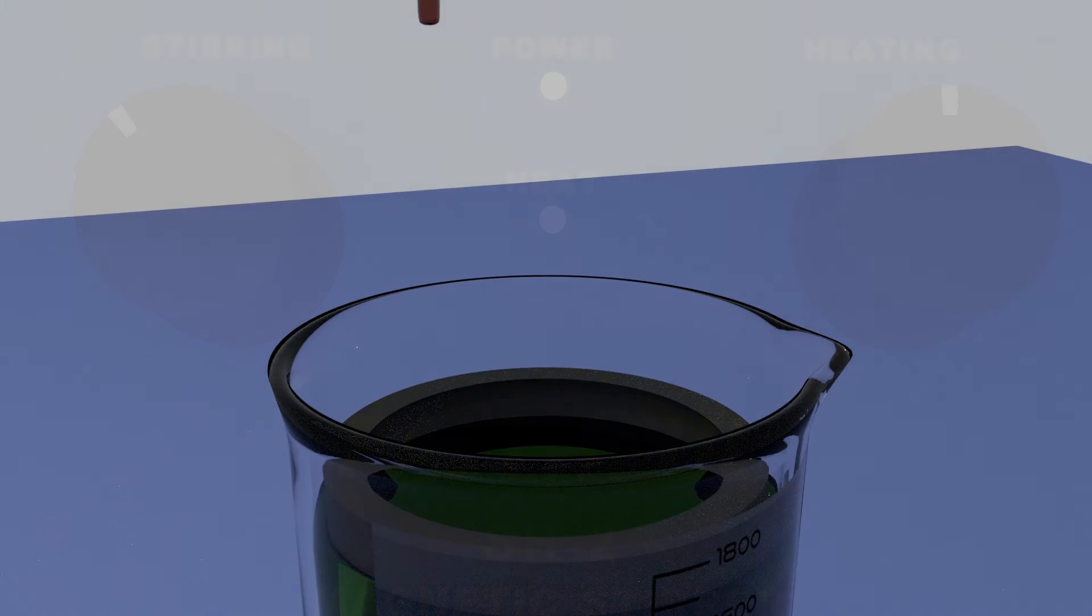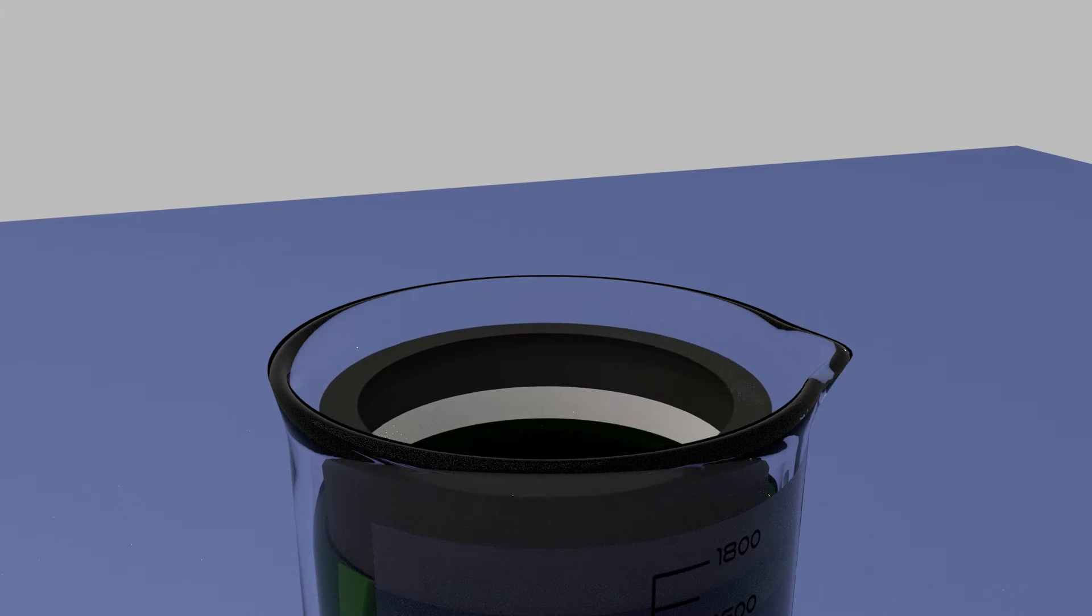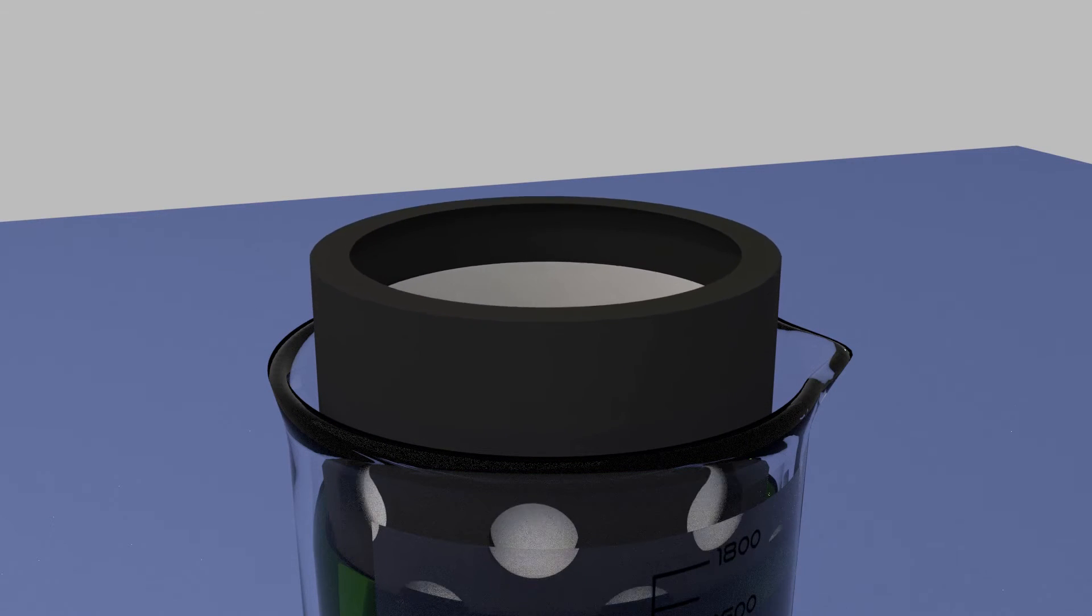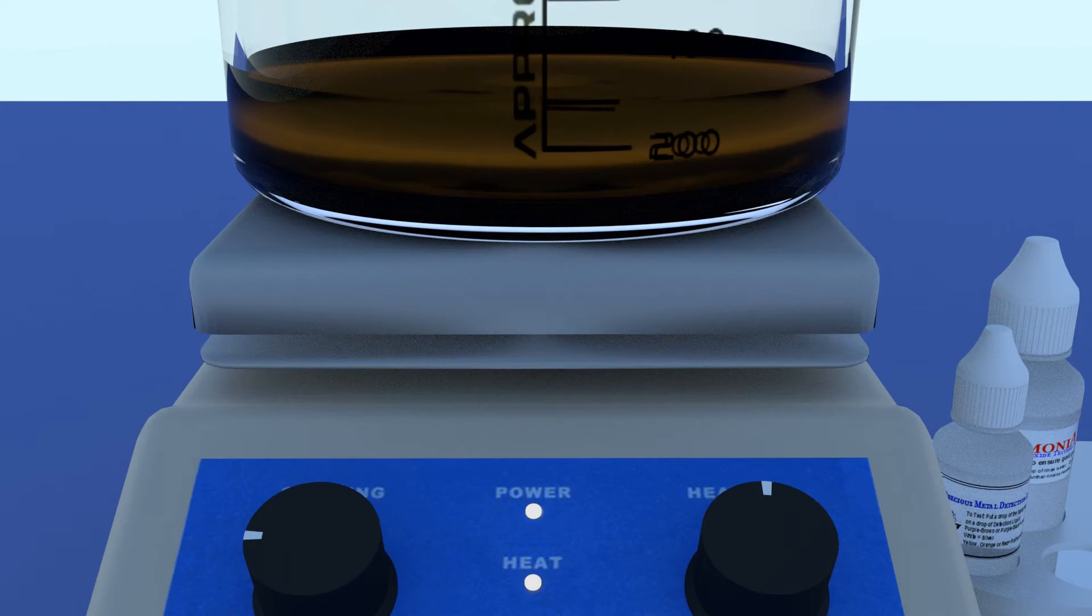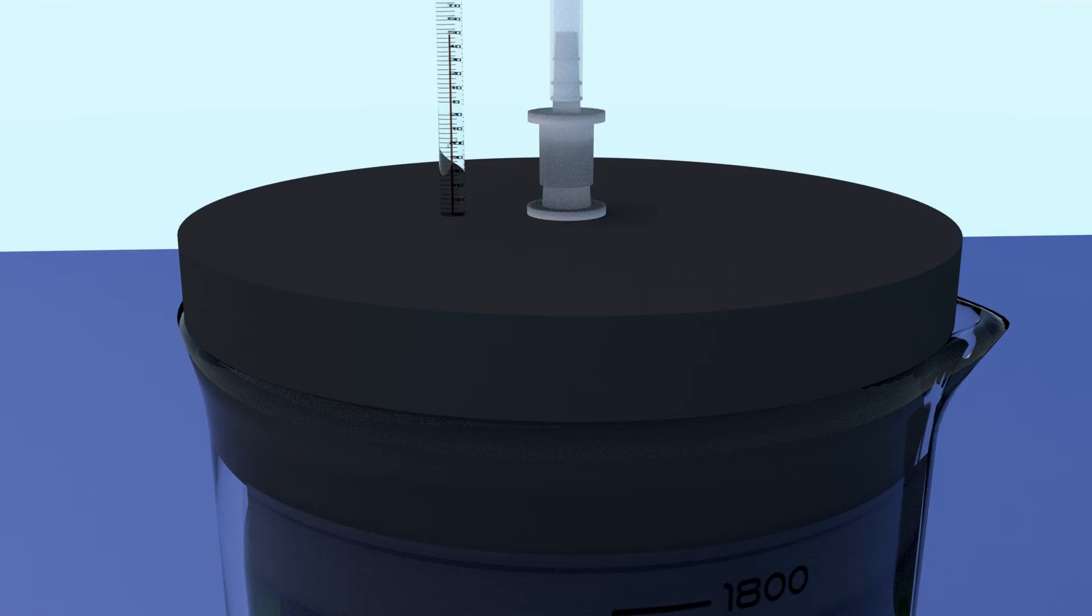When all the metal has dissolved, it's time to separate undissolved materials like diamonds, for example, from the solution. And after that, we'll recover the purified gold. So let's disconnect the scrubber and take the beaker to a well ventilated area, preferably outside.